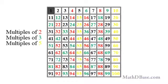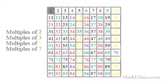Now, starting at 5, color every fifth number in yellow — 10, 15, 20, 25, etc., to 100. These numbers are all multiples of 5.